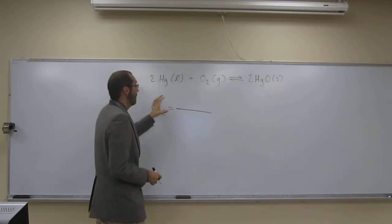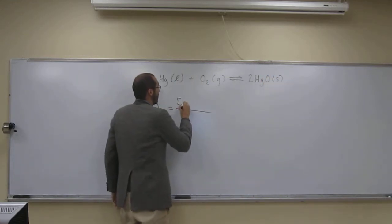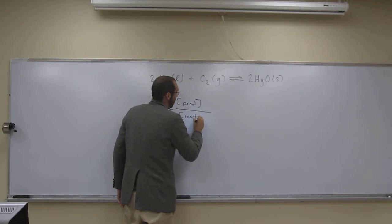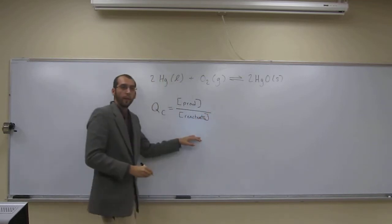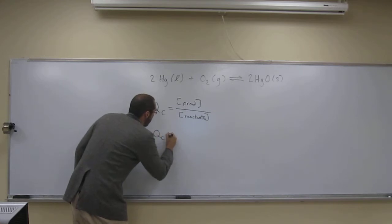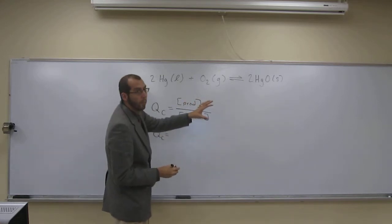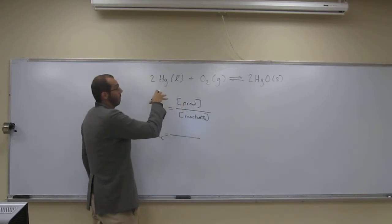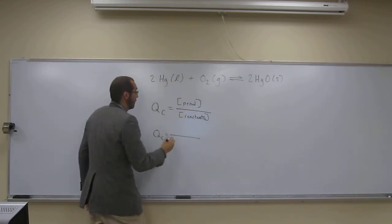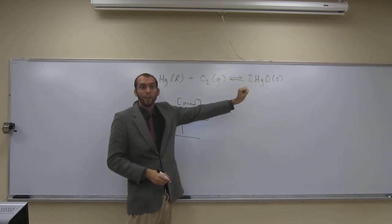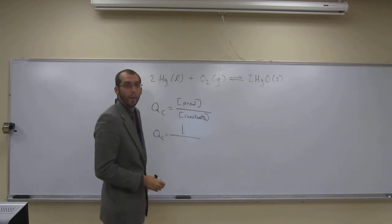So what did we say? QC was the concentration of the products divided by the concentration of the reactants, right? Like that. So what is QC going to be? Normally we would say the concentration of mercury(II) oxide over the concentration of mercury times the concentration of oxygen. But in this case, there is no products that are gaseous or aqueous, so we just put a 1 there, okay?